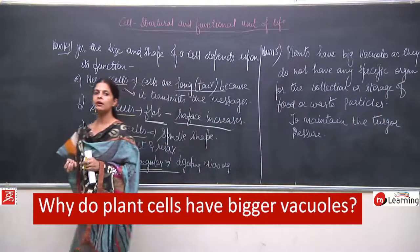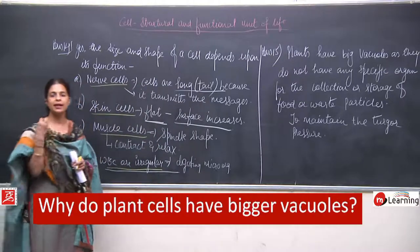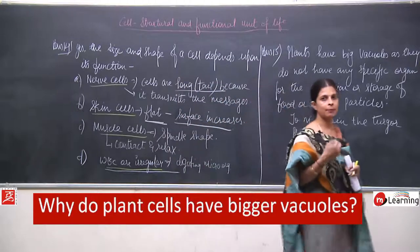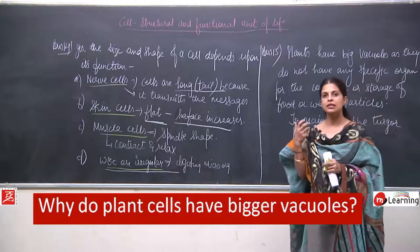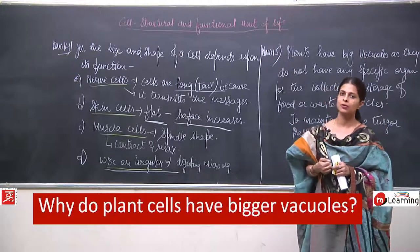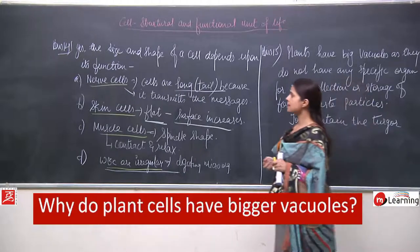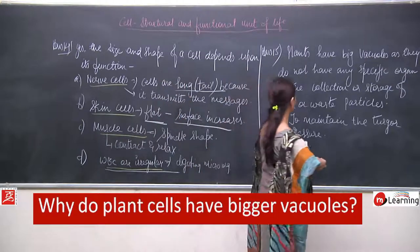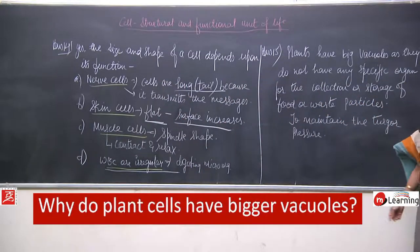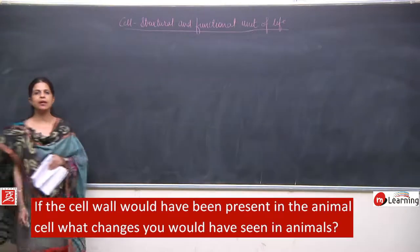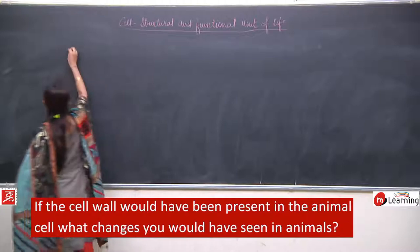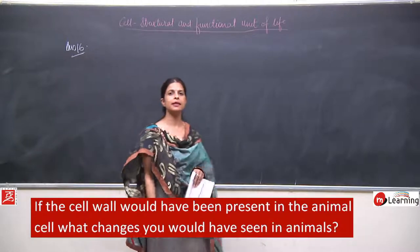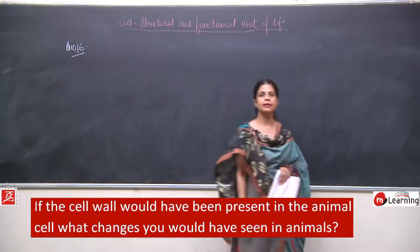The presence of cell wall would be the greatest disadvantage for animals, which is why it is not present in our body. Answer number 16: if animal cells had a cell wall, the presence of cell wall will make the body of animals more rigid and hard, and movements would become impossible.